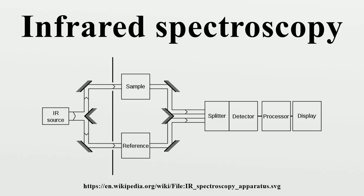In order for a vibrational mode in a molecule to be IR active, it must be associated with changes in the dipole. A permanent dipole is not necessary, as the rule requires only a change in dipole moment. A molecule can vibrate in many ways, and each way is called a vibrational mode. For molecules with n number of atoms, linear molecules have 3n−5 degrees of vibrational modes.